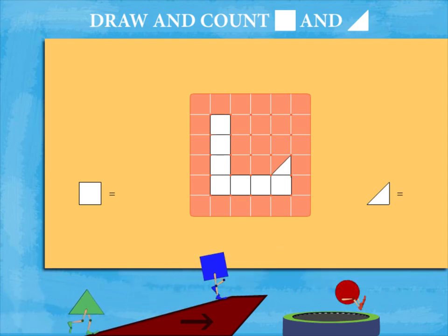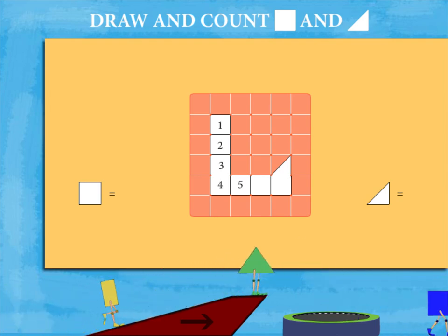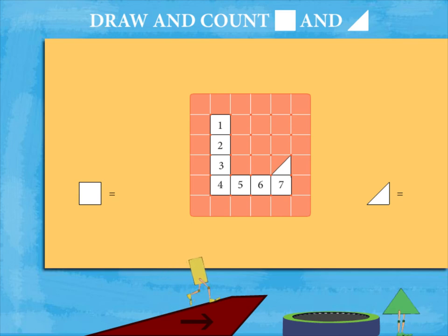The squares are 1, 2, 3, 4, 5, 6, and 7, and then one triangle.